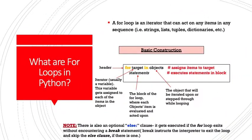On this slide, we'll look at what loops are and their basic construction. A for loop is an iterator that can act on any items in any sequence. For example, strings, lists, tuples, dictionaries. The basic construction is what I have here in the middle of the page. This first line, for targets in objects, this is known as the header of our for loop. This assigns items to the target. The target is the iterator. It's usually a variable.